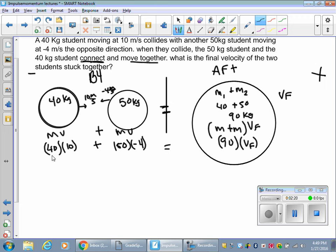Okay, so let's do some math. 40 times 10 is 400 plus a negative 50 times negative 4, negative 200 equals 90 v final. 400 minus 200, positive 200 equals 90 v final.